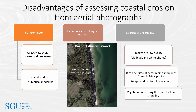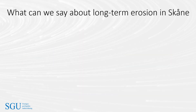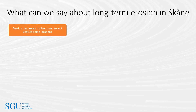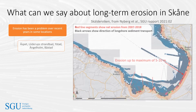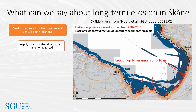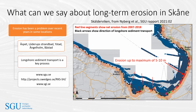Vegetation, including overhanging trees and dead sea grass deposited by waves on the beach, may also obscure the dune foot or shorelines you wish to map, as shown in this image. So, what can we say about long-term erosion in Skåne from our aerial photograph analyses? Erosion has been a long-term problem in some locations over recent decades, including Åhus, Löderup-Strandbad, Ystad, Ängelholm and Borstahuset. An analysis of Ängelholm is shown in the image. Longshore sediment transport is a key driver of erosion in these locations, and you can read more about the erosion at these sites by visiting the websites shown.